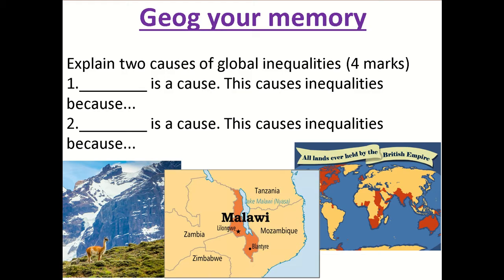Your memory question from the development topic is: explain two causes of global inequalities. The command word for this question is 'explain,' which means why — why is something happening or what is causing it. It's a four mark question, so you need to give one cause for the first mark, then explain why that actually causes an inequality. Inequality means why one place might be more or less developed — another word for this is a barrier to development, something that has stopped a country from being able to develop fully.